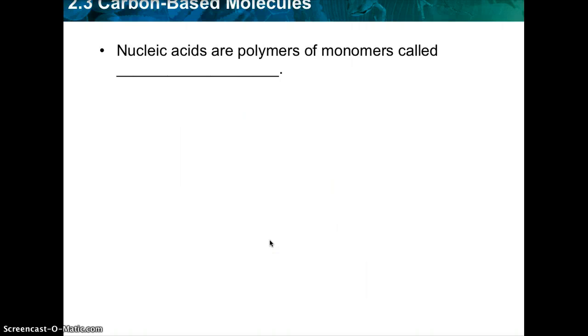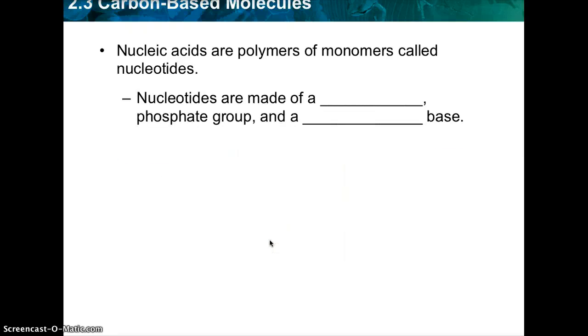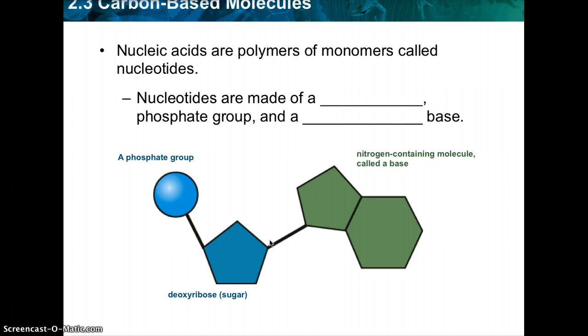So nucleic acids are polymers of monomers called nucleotides. You should remember these from your DNA and your RNA. So we're going to talk a little bit about nucleic acids. And they are basically made of sugar, phosphate group, and a nitrogen base. So you can see the phosphate group over here on the left, the deoxyribose sugar, and then over here on the right is a nitrogen-containing molecule, which is often referred to as a nitrogenous base or the nitrogen base.